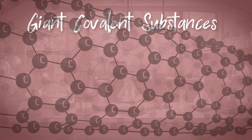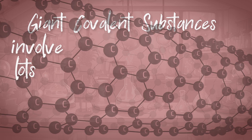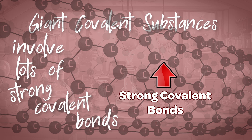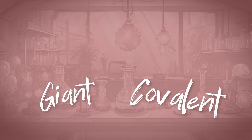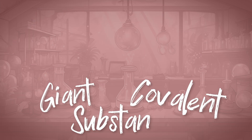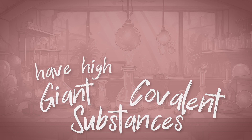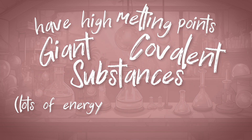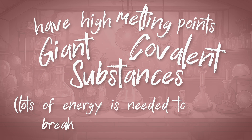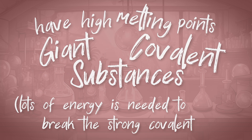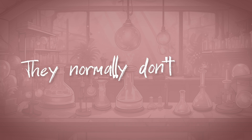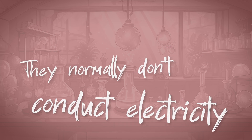Giant covalent substances involve lots of strong covalent bonds and have high melting points. A lot of energy is needed to break the strong covalent bonds. They normally don't conduct electricity because the electrons aren't free to move.